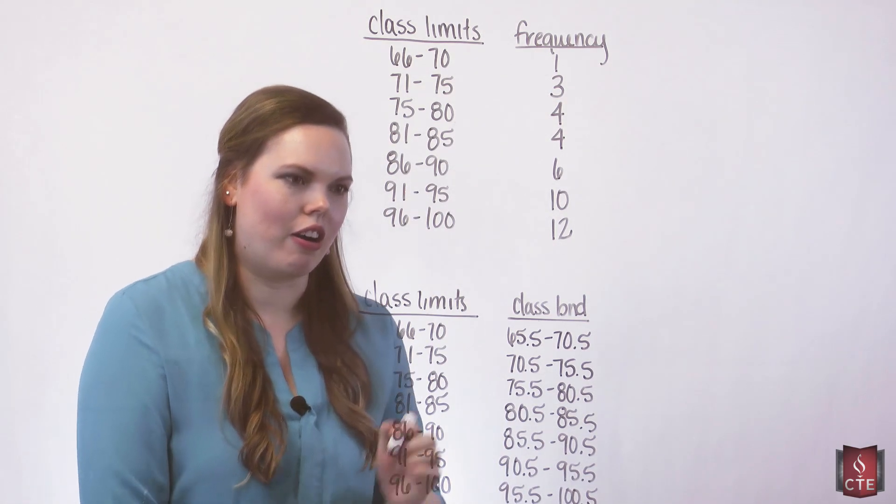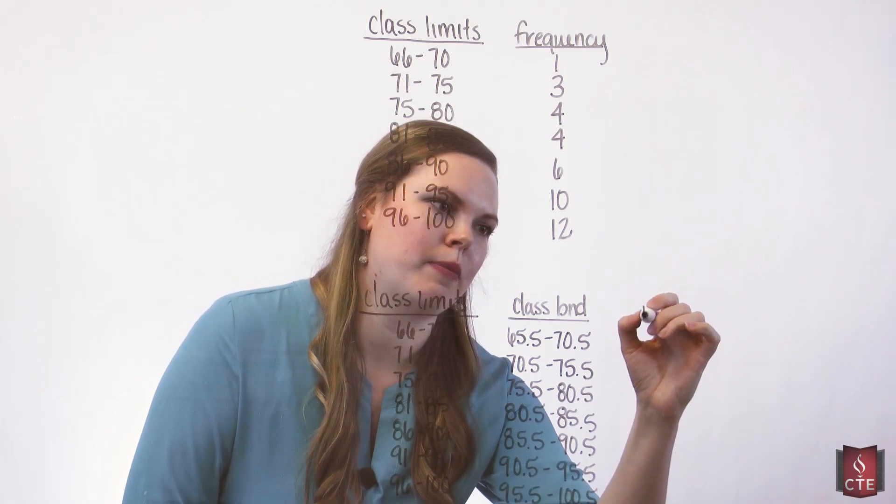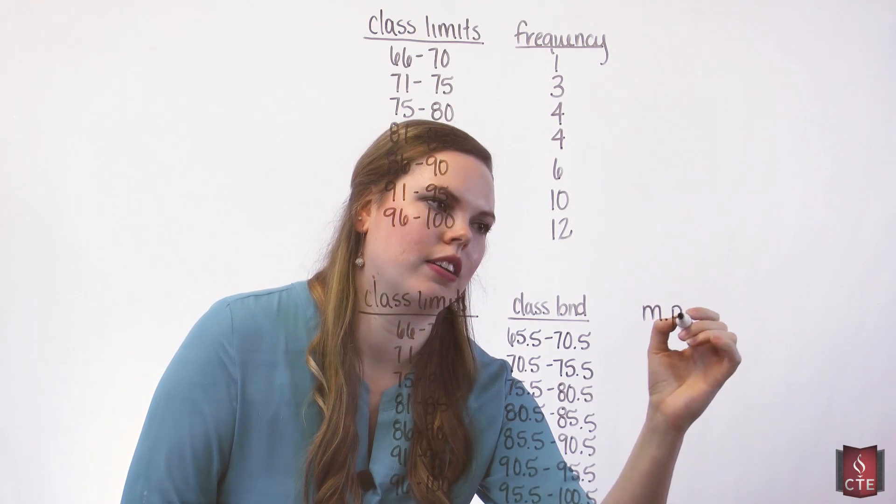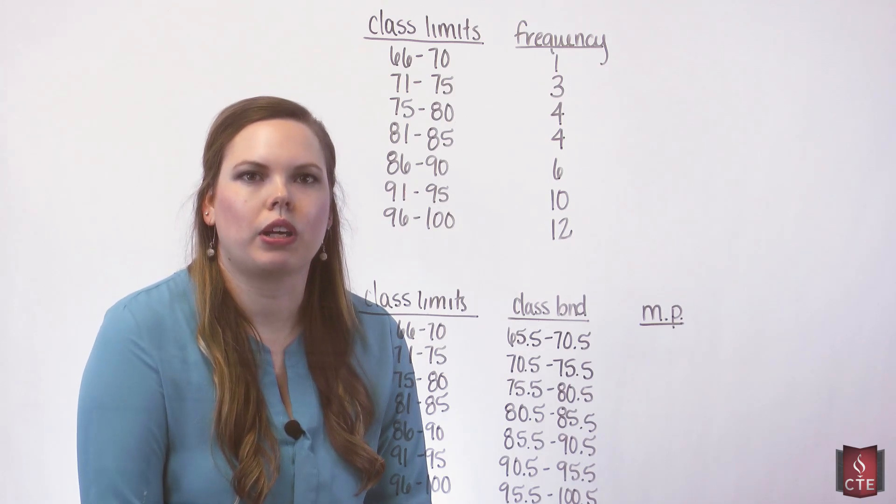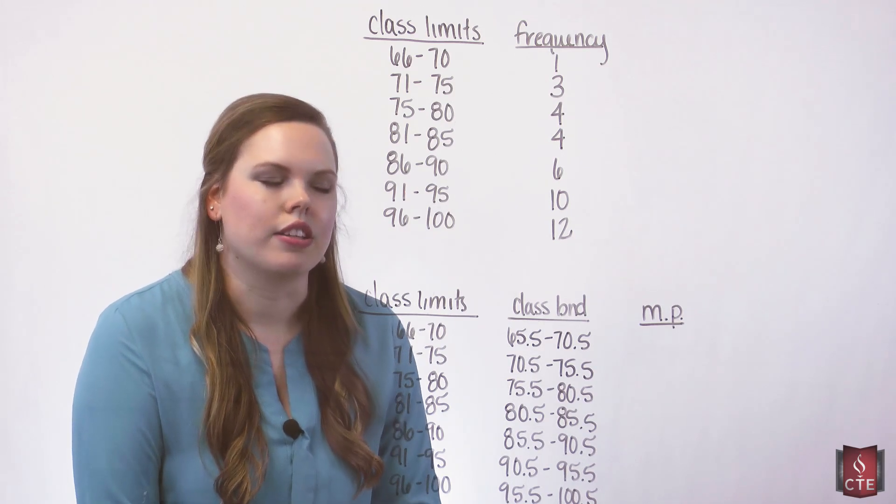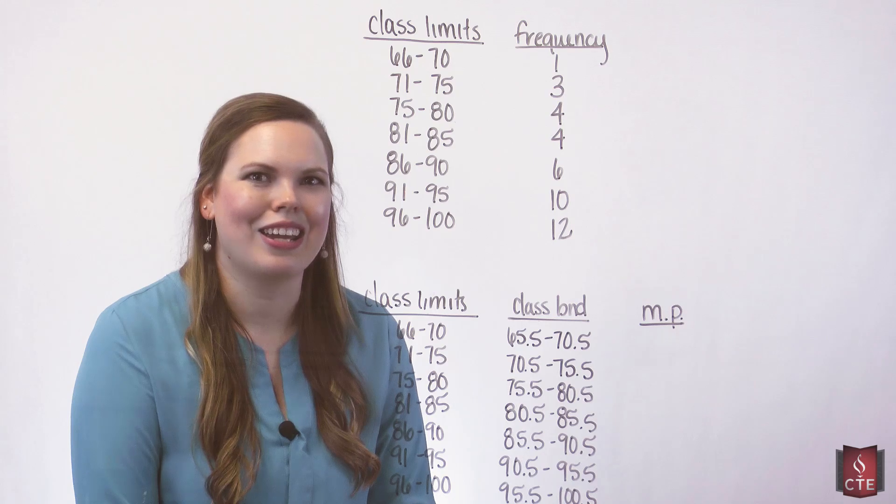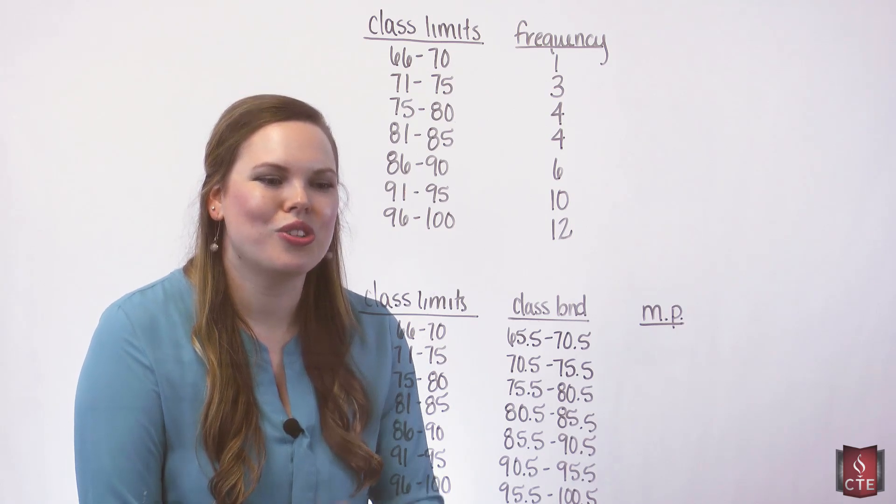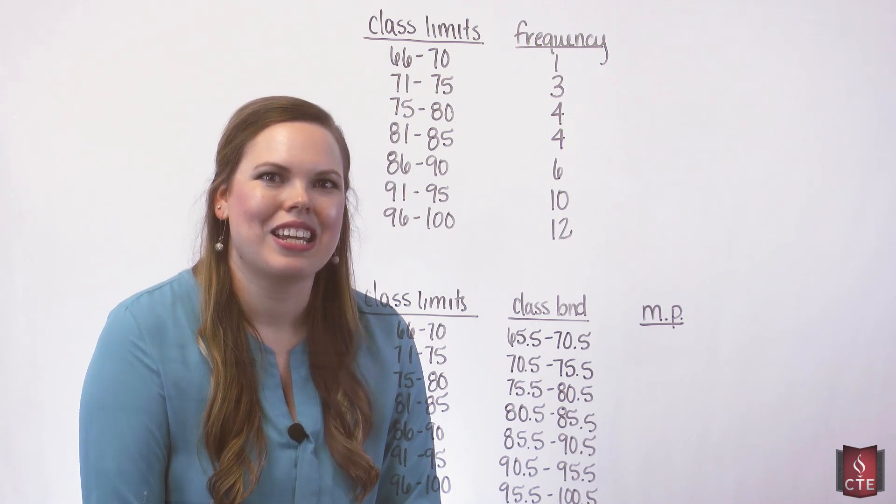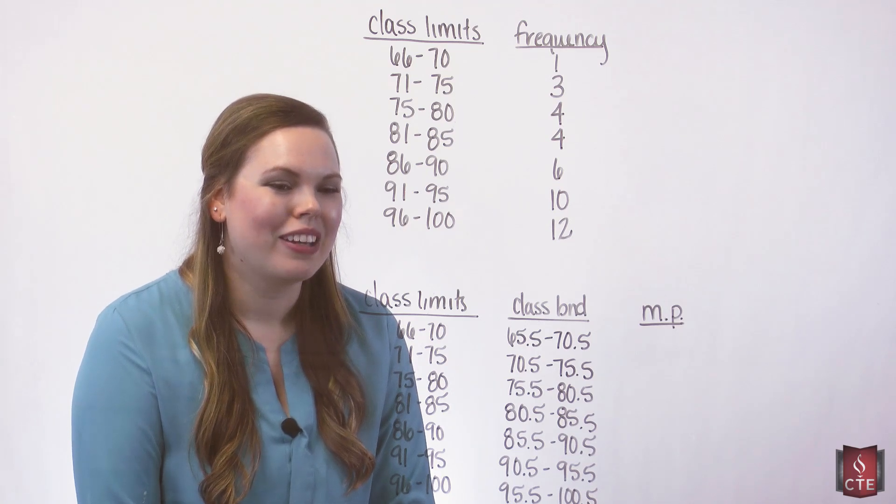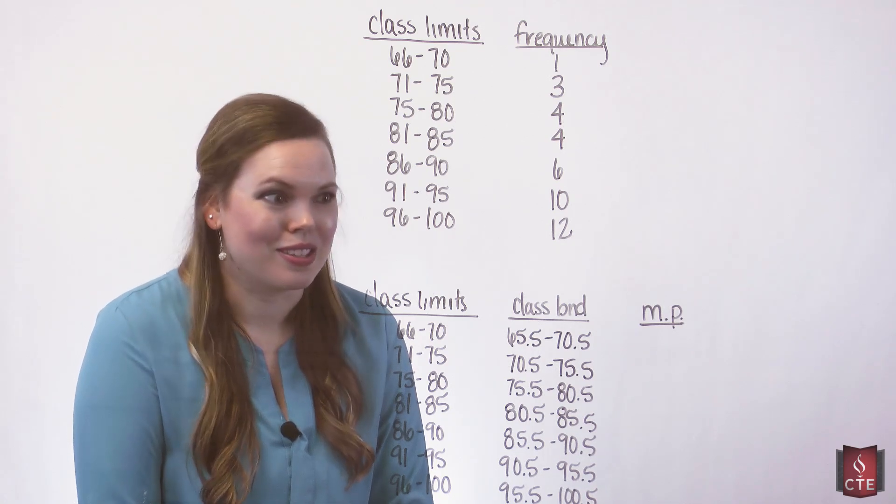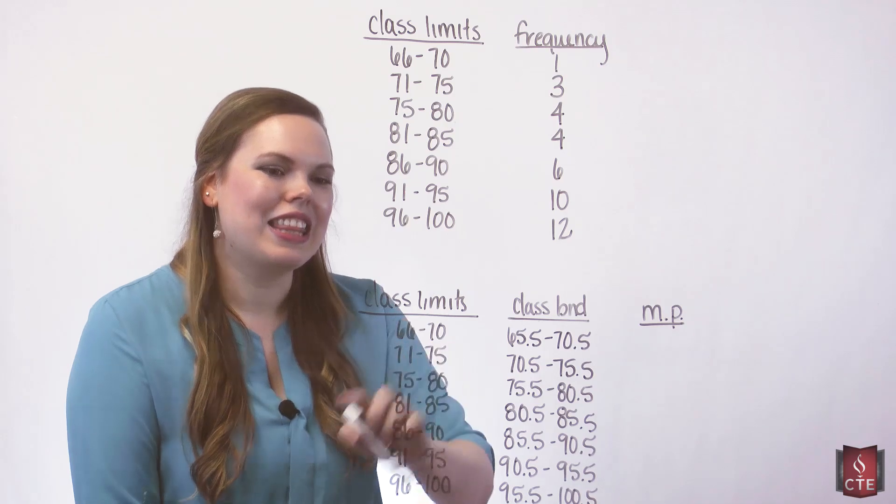We'll also look at our midpoint. I'm going to use MP for midpoint. Our midpoint is used when we construct our frequency polygon. So it's really nice to have. I intentionally chose classes and a class width so that my midpoint would be a whole number. I chose an odd class width. This is why.